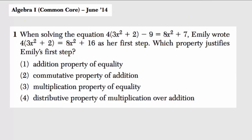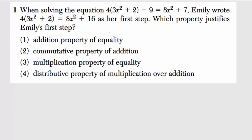So with this question, I might start by rewriting what they're giving us below in this area down here, or if you're doing this on paper, in any space that you have that's available. So first we have 4 times 3x squared plus 2 minus 9 equals 8x squared plus 7.